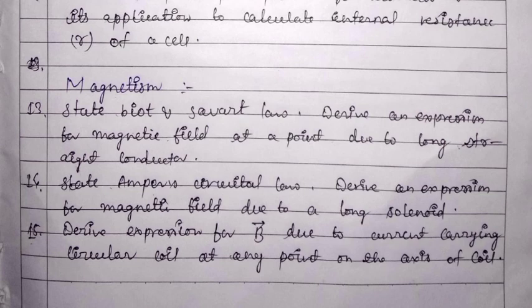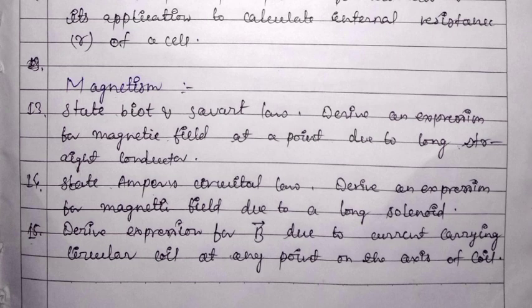In the magnetism chapter, the important derivations are: state Biot-Savart law and derive an expression for the magnetic field at a point due to a long straight conductor, state Ampere's circuital law and derive an expression for the magnetic field due to a long solenoid, and derive the expression for the magnetic field due to a current-carrying circular coil at any point on its axis.